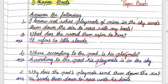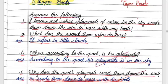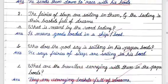Part b: Where, according to the poet, is his playmate? Answer: According to the poet, his playmate is in the sky. Part c: Why does the poet's playmate send them down the air? Answer: He sends them down to race with his boats.